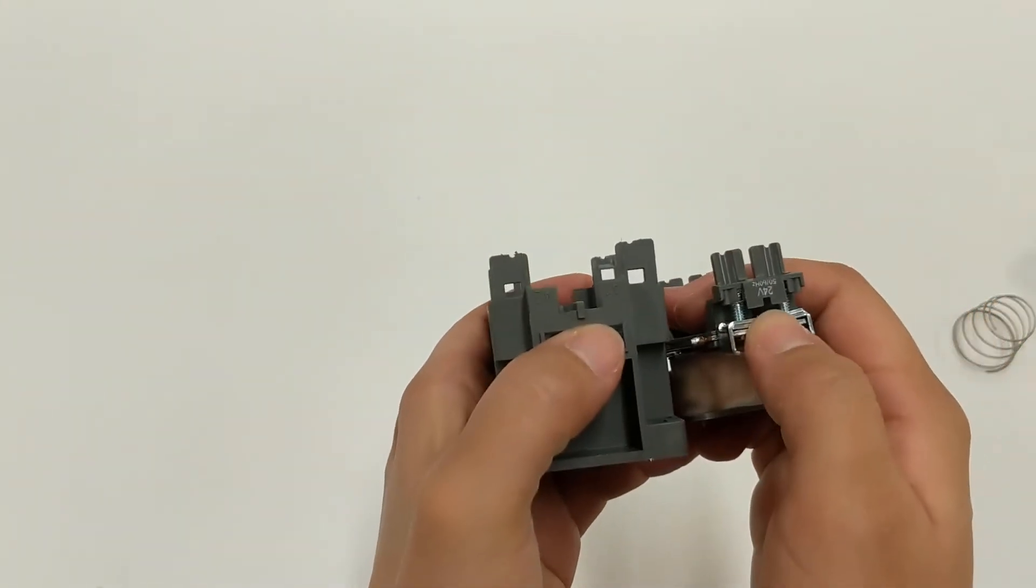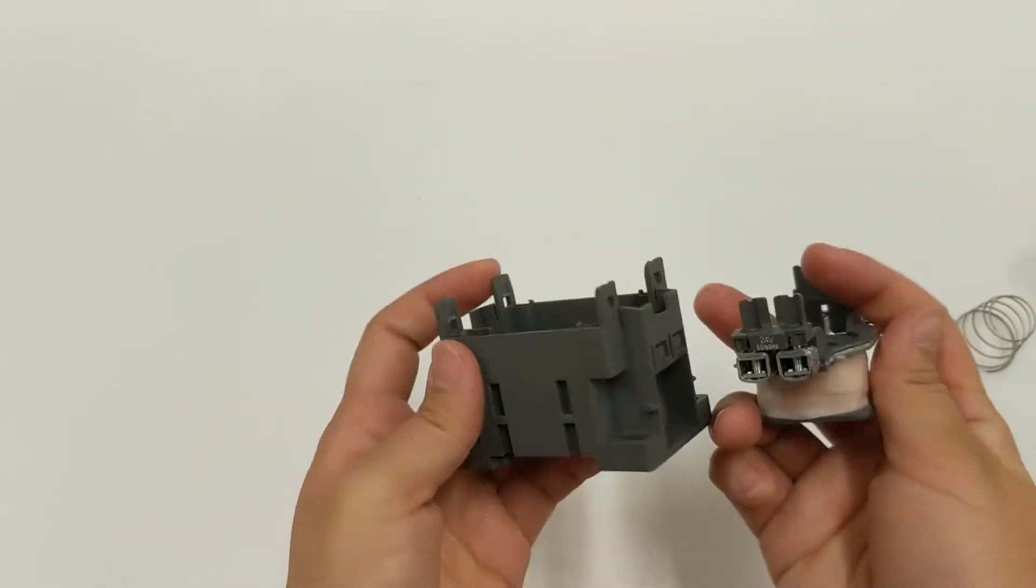Make sure that the notch on the bottom half aligns at the side with the indent so that the coil is placed with the right orientation.